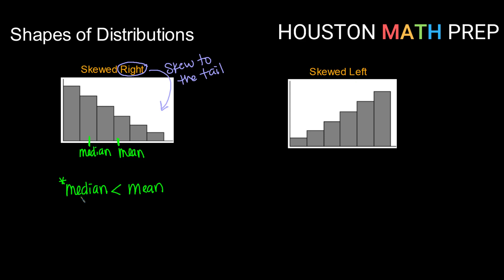In our skewed left distribution, it's basically the opposite. The mean is being pulled down by the small values, so the mean might be somewhere lower, and the median might be somewhere higher. In general, for a skewed left distribution, your mean will be smaller than your median. And again, your median will tend to be the better estimator for a central value.